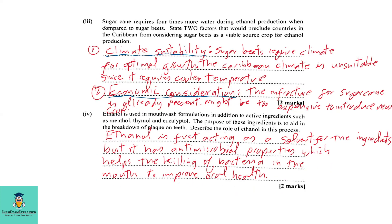Part 3: Sugar cane requires four times more water during ethanol production when compared to sugar beets. State two factors that would preclude countries in the Caribbean from considering sugar beets as a viable source crop for ethanol production. One, climate suitability. Sugar beets require cooler climate for optimal growth. The Caribbean climate is unsuitable since it requires cooler temperature. Two, the economic consideration. The infrastructure for sugar cane is already present and it might be too expensive to introduce a new crop which is the sugar beet.